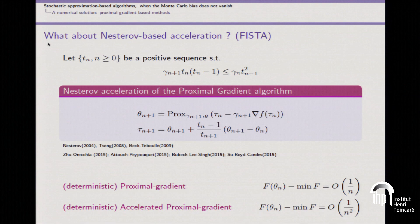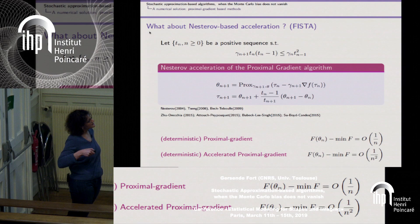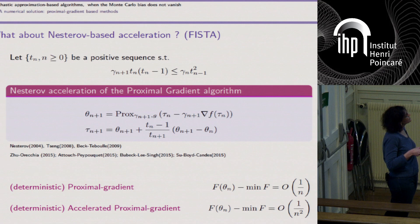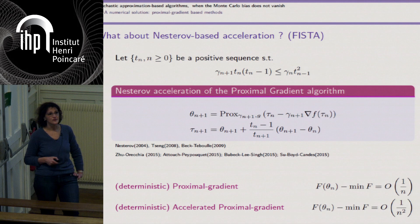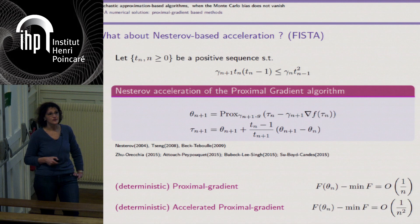There is also an accelerated version: the proximal gradient decays at rate 1/n on the functional, while Nesterov acceleration gives 1/n^2. The acceleration introduces an intermediate quantity based on the two previous values of theta_n. We can apply the same perturbed framework when the gradient cannot be computed: replace the exact gradient by an approximation h_{n+1} and study conditions on the step size gamma_n, the relaxation parameter T_n, and the perturbation.